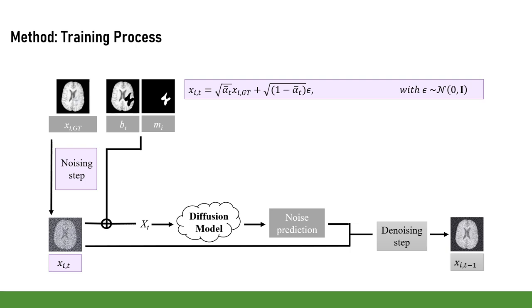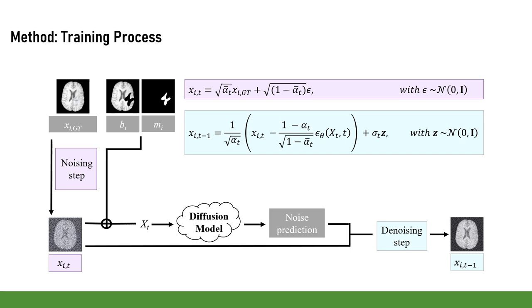This concatenated image Xₜ then serves as input to our diffusion model, which predicts the noise at time step t. The image xᵢₜ₋₁ can then be computed via a denoising step.